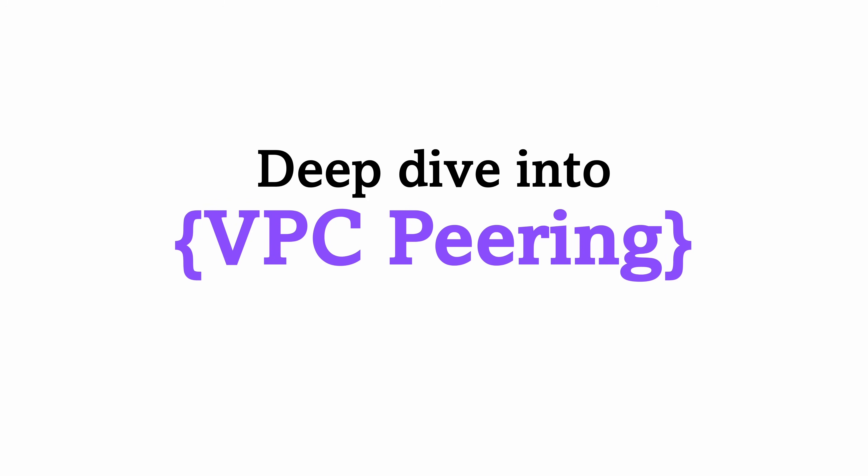Hi, welcome to Cloud with Previn. Today we are diving into VPC peering, a powerful way to connect two AWS networks privately. It will be quite straightforward, but there are key rules and limitations that you need to understand. We'll walk through it step by step with diagrams to make everything clear.